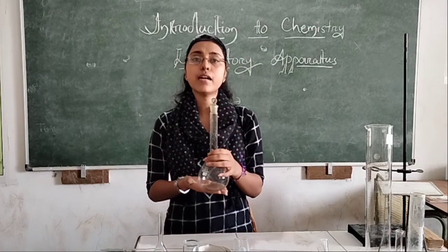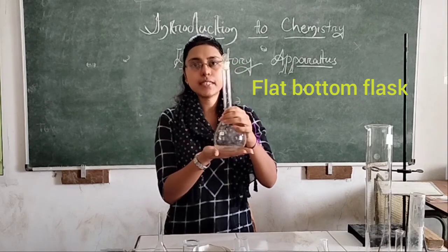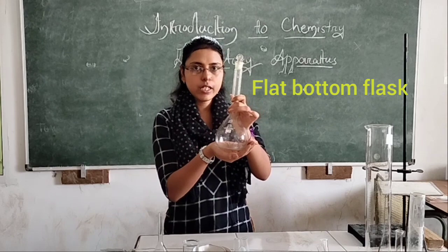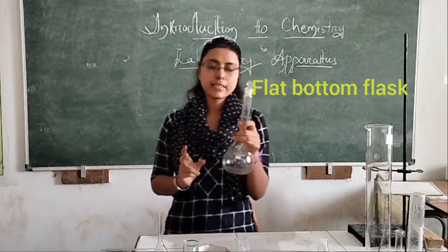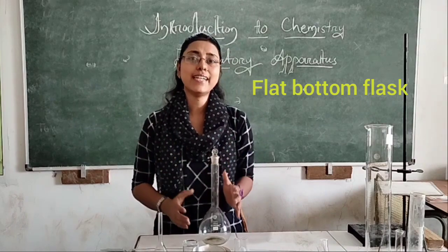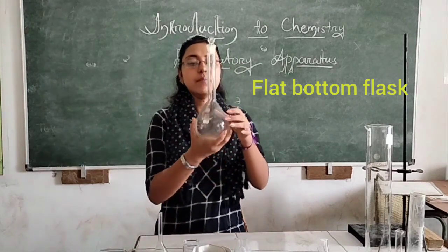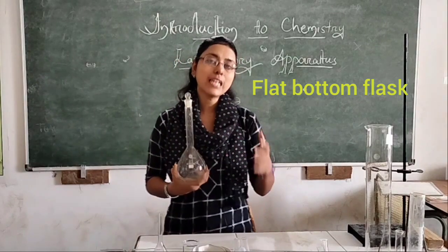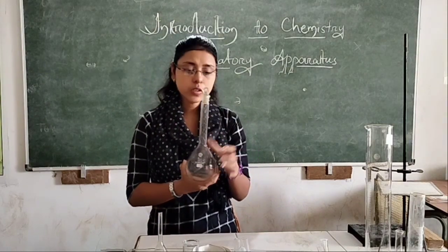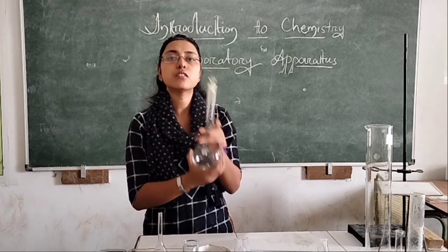This one is our flat bottom flask — we call it flat bottom because its bottom is flat. Another kind of flask is the round bottom flask, where the bottom is round. The difference is that in a flat bottom flask we can keep it standing on its own, but the round bottom flask cannot stand itself and needs a holder. Different chemical solutions are prepared in the flat bottom flask because the measurement is exact — it is marked as 500 ml, and up to that glass mark the solution will be exactly 500 ml.